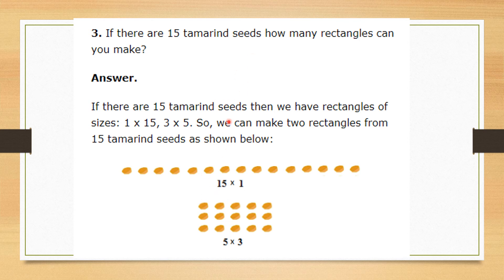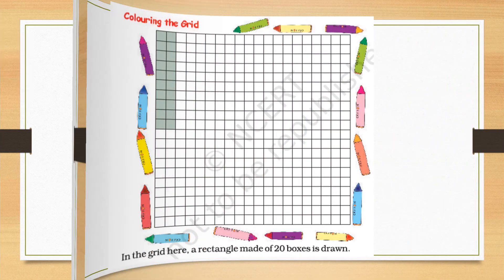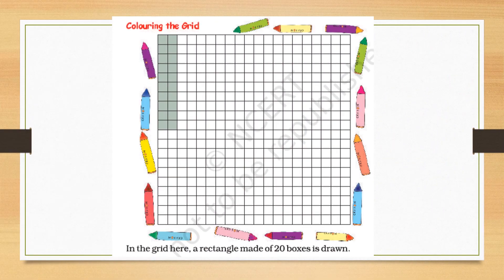Now for the rectangle activity, you will need to open your textbook to page number 93 and please read the questions. In the grid there, a rectangle made of 20 boxes is drawn.